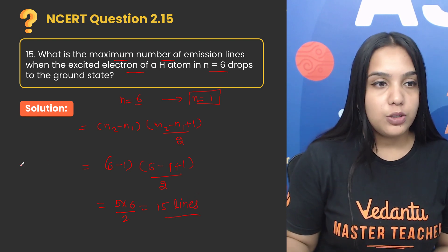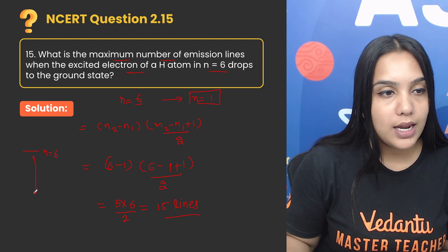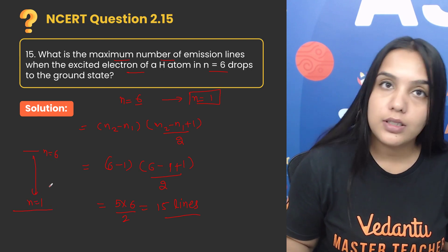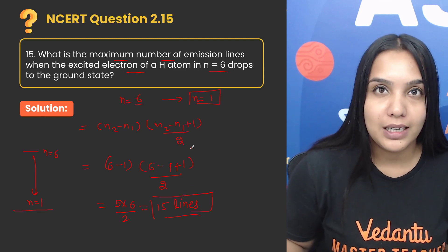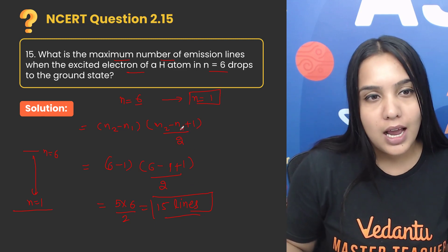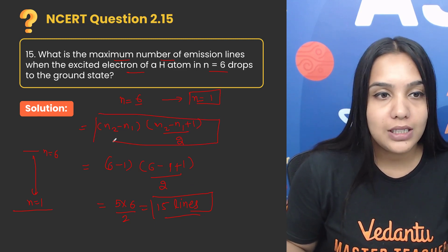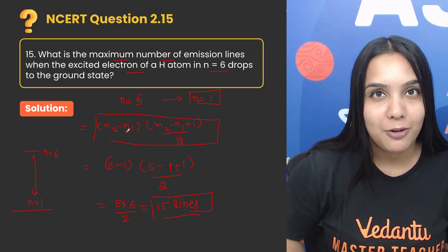So whenever emission occurs from n equals 6 to n equals 1 ground state, a total of 15 lines will be observed in the spectra of hydrogen. I hope this formula and this question is clear to everyone. Thank you so much for watching.